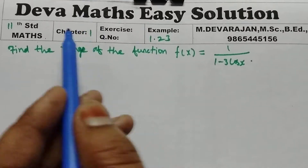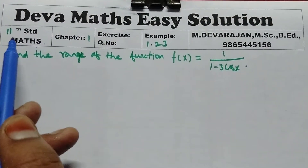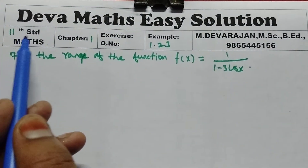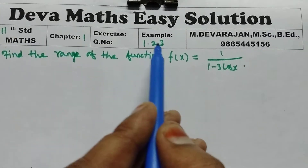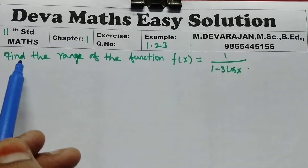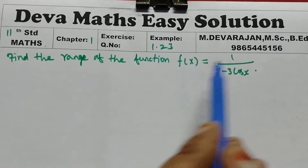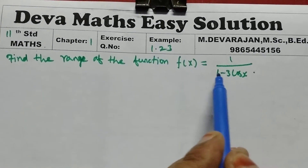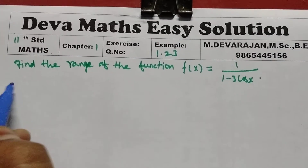Hi everyone, this is Deva from Deva Maths Easy Solution. Today we are going to solve Class 11 Maths Chapter 1 Example 1.23: find the range of the function f(x) = 1 / (1 - 3 cos x).